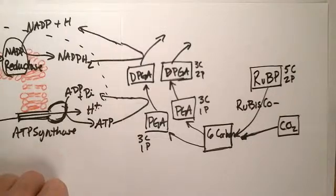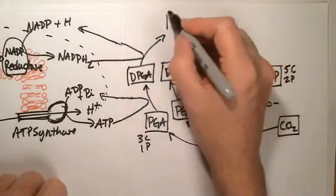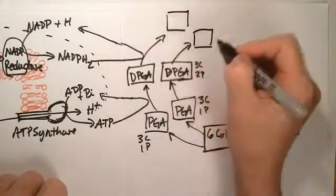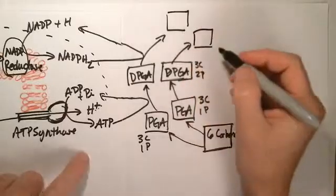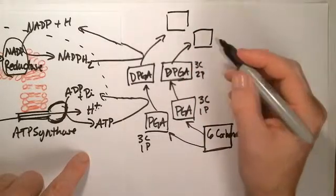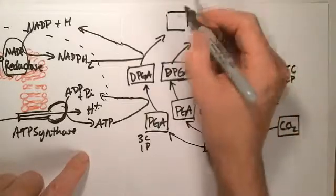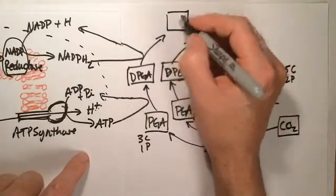It's going to get rid of a phosphate. It's going to add in some hydrogens. You don't really need to know all of that detail. But this is going to make basically PGAL, or phosphoglyceraldehyde, or glyceraldehyde-3-phosphate.